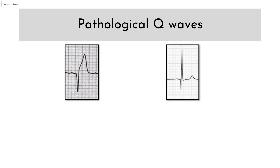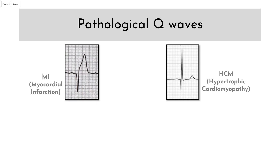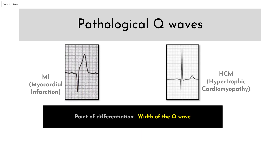For pathological Q waves, there are two important DDs: MI and HCM. The point of differentiation is the width of the Q wave. If the width is less than 40 milliseconds or one small box, it is suggestive of HCM. If the width is 40 milliseconds or more, it is suggestive of MI.